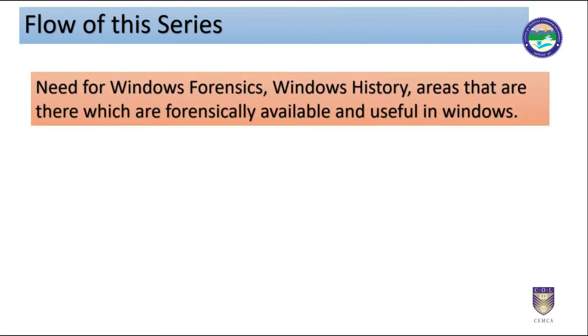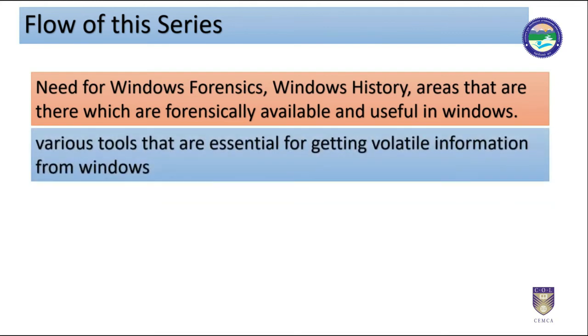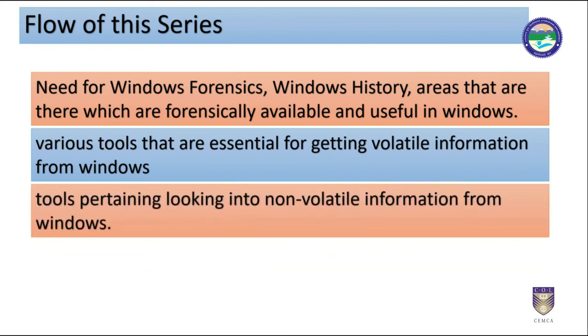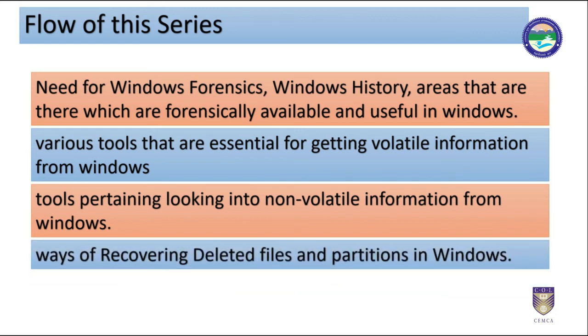Friends, in this video series, firstly in Part 1, we will see the need for Windows forensics, Windows history, and the areas that are forensically available and useful in Windows. Then secondly, in Part 2, we will delve briefly into various tools that are essential for getting volatile information from Windows. Thirdly, in Part 3, we will look into tools pertaining to non-volatile information from Windows. And lastly, in Part 4, we will look into ways of recovering deleted files and partitions in Windows.